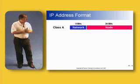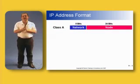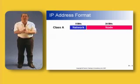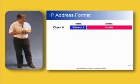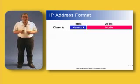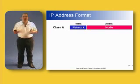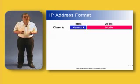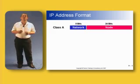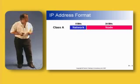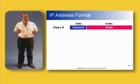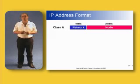Back in the early days, somebody decided to create different classes of address. The first class is called a Class A network. A Class A network consists of 8 bits of network space with 24 bits of hosts, giving potentially 256 networks, each of which can support 16.7 million hosts. These were given to the big companies — the IBMs of this world, Hewlett-Packard, the US government.